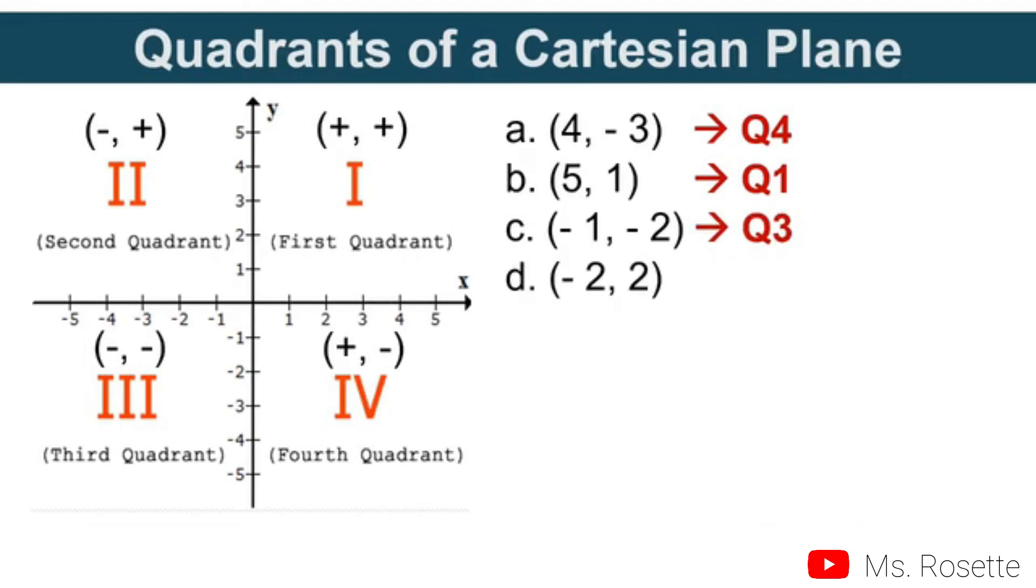The fourth example: (-2, 2). Negative first, then positive. It belongs to quadrant 2. Another: (-5, -4). They are both negative, so they belong to quadrant 3.